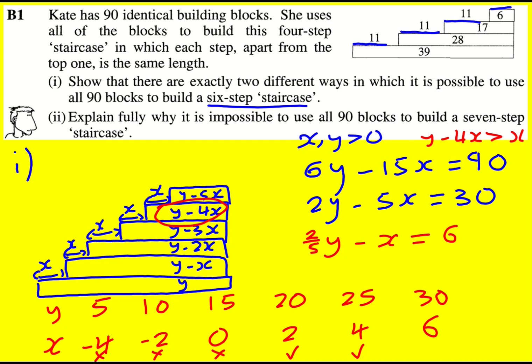Now let's just check out this one. So I said that y minus 4x is greater than x, which is equivalent to y minus 5x being greater than 0. Now that is not the case here. It's actually going to equal 0, so the very top step would in fact be 0 and it would be a 5-step staircase.